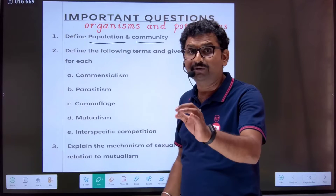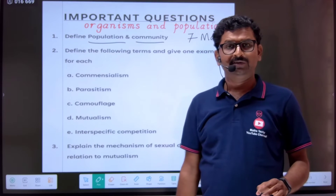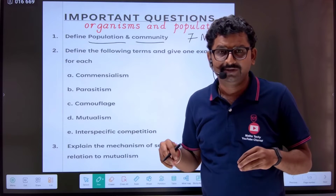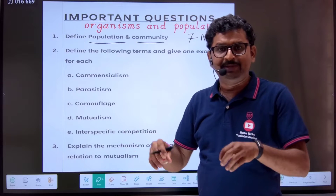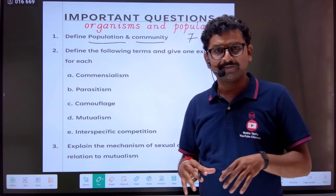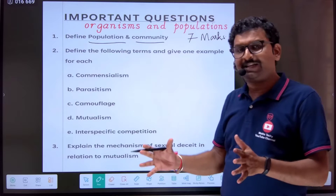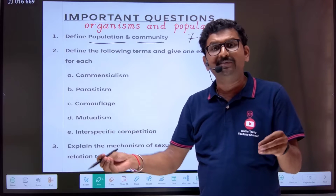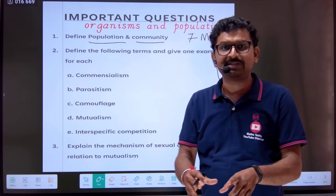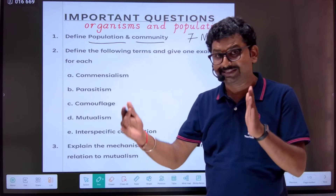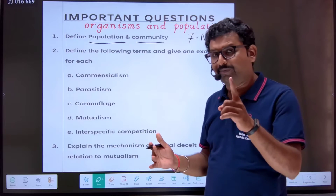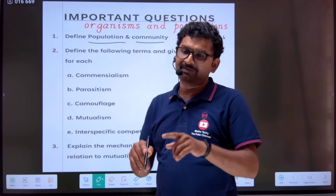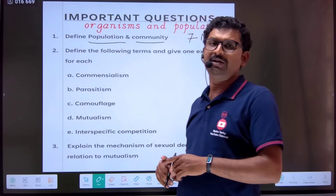Define population and community. Population — for example, in India, all Indians are human beings, Homo sapiens, living in a given geographical area. So population is defined as all similar organisms which belong to the same species, living in a geographical area in a given period of time. That is called population.